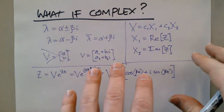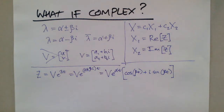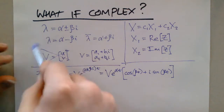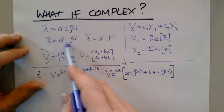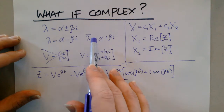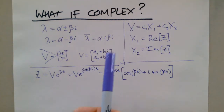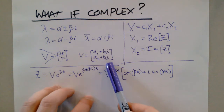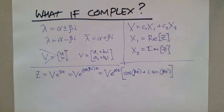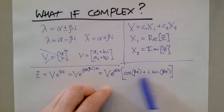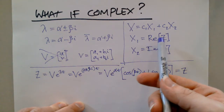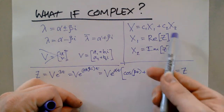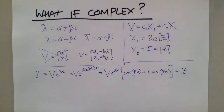This is a bit abstract right now, but it will make more sense with a worked example. As a summary: with complex eigenvalues in a 2D system, lambda equals alpha minus beta i and its conjugate is alpha plus beta i. The eigenvector will have both real and imaginary parts. We then rewrite the solution using vector Z, and split it into real and imaginary parts to plug into our solution vector capital X. Let's jump into an example.